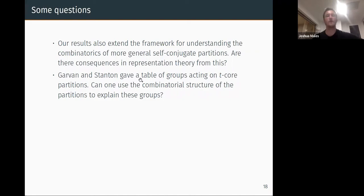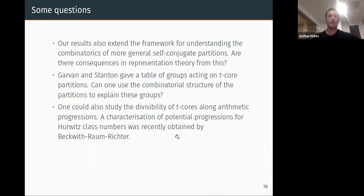Another question is that in these influential papers of Garvan, Kim, and Stanton, in particular one of Garvan and Stanton, they give a table of groups. So certain dihedral and cyclic groups that act on t-core partitions. So can we use the combinatorial structure of the partitions that we give to explain these groups? This is something that Stanton brought up again a couple of weeks ago in a seminar. So can we use these explicit descriptions of partitions to explain these dihedral groups that act?